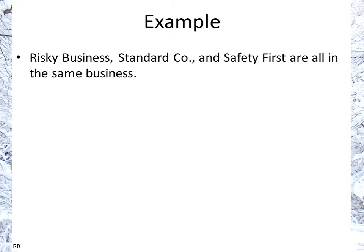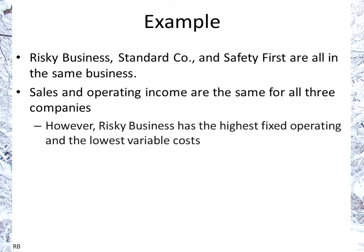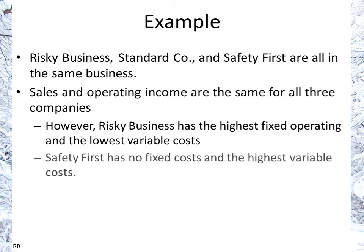Let's take three businesses hypothetically: Risky Business, Standard Co, and Safety First. They're all in the same business, and sales and operating income are the same for all three companies. However, Risky Business has the highest fixed operating cost and the lowest variable cost. Safety First has no fixed cost but the highest variable cost. And Standard Company is in between — kind of Goldilocks.